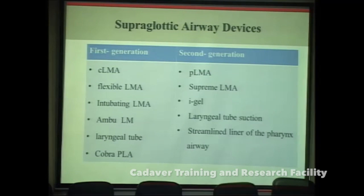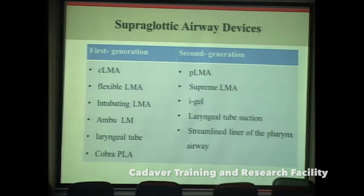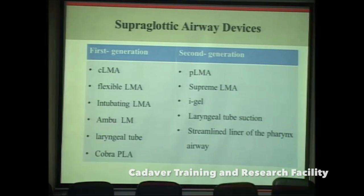A simpler classification given by Cook et al. divides supraglottic airway devices into first generation and second generation. First generation devices are simple airway tubes that keep the upper airway patent and help in assisted ventilation. Second generation devices incorporate extensive design features including an extended drain tube and gastric drain tube, which prevents gastric aspiration. First generation includes the classic LMA, flexible LMA, intubating LMA, Ambu laryngeal mask, laryngeal tube, and the Cobra perilaryngeal airway.